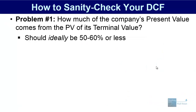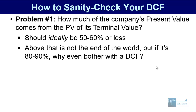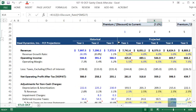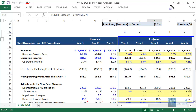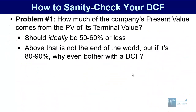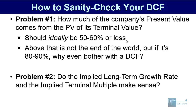Ideally this should be more like 50 to 60 percent or less. It's not the end of the world if it goes above that, but if it's something like 80 to 90 percent, you have to ask: why even bother with the DCF? If the present value of the terminal value is 90 percent of a company's implied value, you might as well just value it with a multiple or a simple growth rate and skip the DCF altogether.